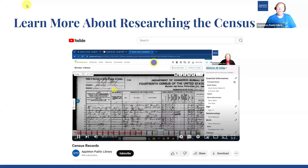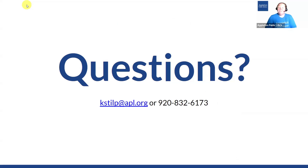I hope that helped you be able to find your ancestors. But if you need to learn a little bit more about researching the census or learn about some more tips and tricks about using census records, be sure to check out our YouTube recording all about census records that I'm going to link right here for you to click on, or you can find it right in this playlist. If you have any questions, feel free to reach out to me. My email address is on the screen — kstilp@apl.org — or you can give our reference desk a call at 920-832-6173. Good luck researching!